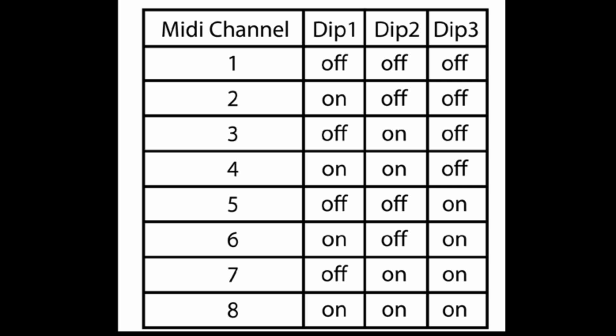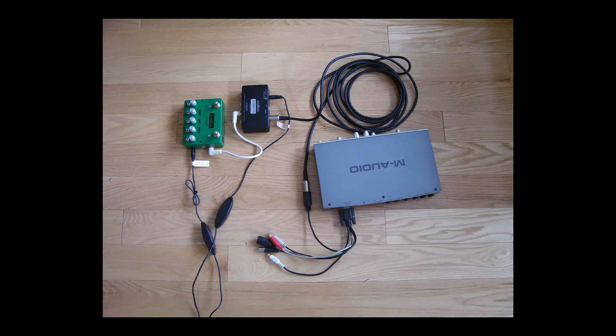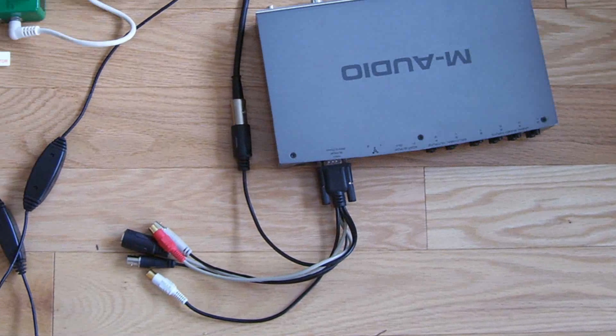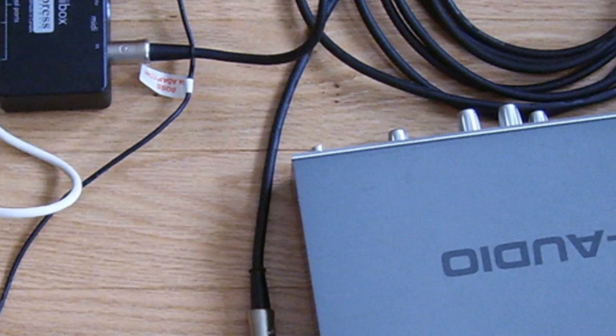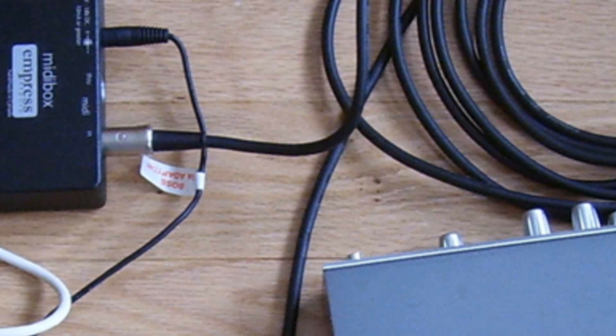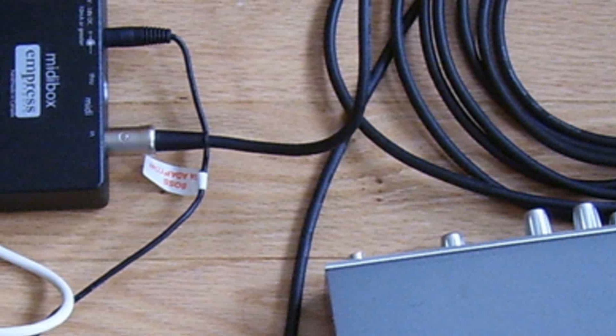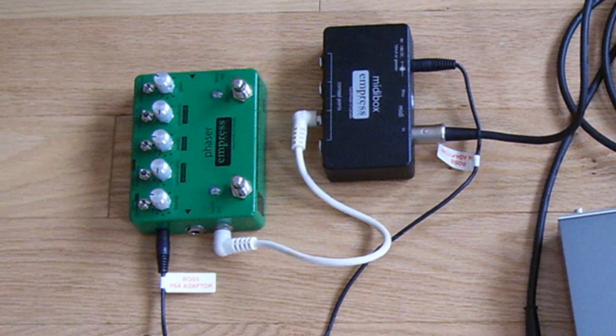Now we'll connect the Phaser to the Empress MIDI box and the Empress MIDI box to our M-Audio sound card. We take the MIDI out of the M-Audio box and connect it to the MIDI in of the Empress MIDI box with a standard MIDI cable.